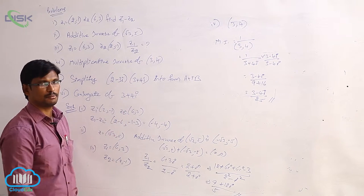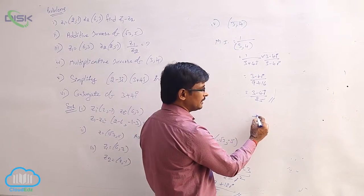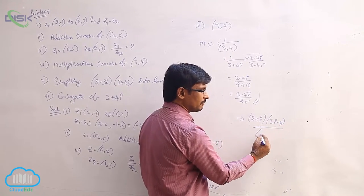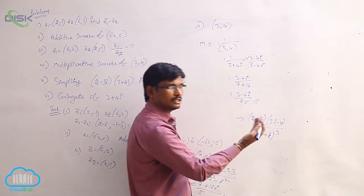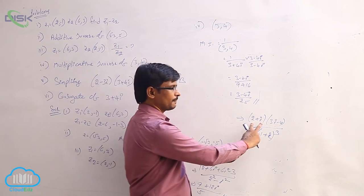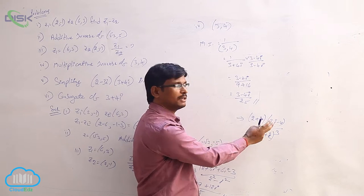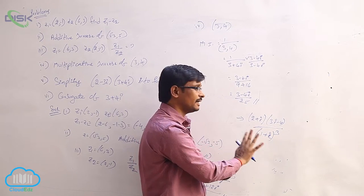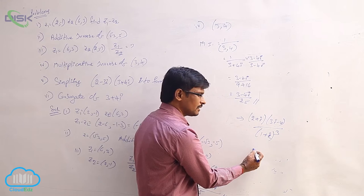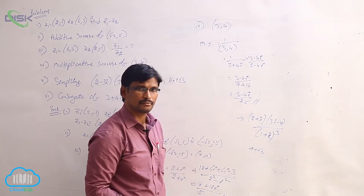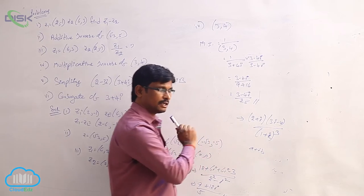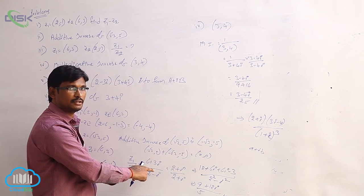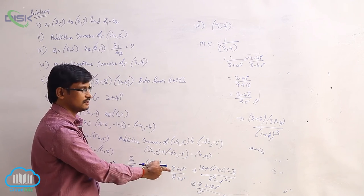These are the basic problems. Sometimes they will give something like (2 + i)(3i − 4) / (1 + i)³ and ask to simplify. Here you can see we need to multiply the numerator out, and the denominator is in the form (a + b)³ which we expand. After simplifying numerator and denominator into the form a + bi, multiply and divide by the conjugate of the denominator to get the final simplified result.